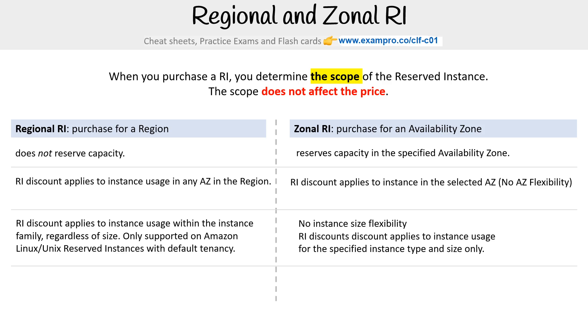You can queue purchases for regional RI, but you cannot queue purchases for zonal RI.